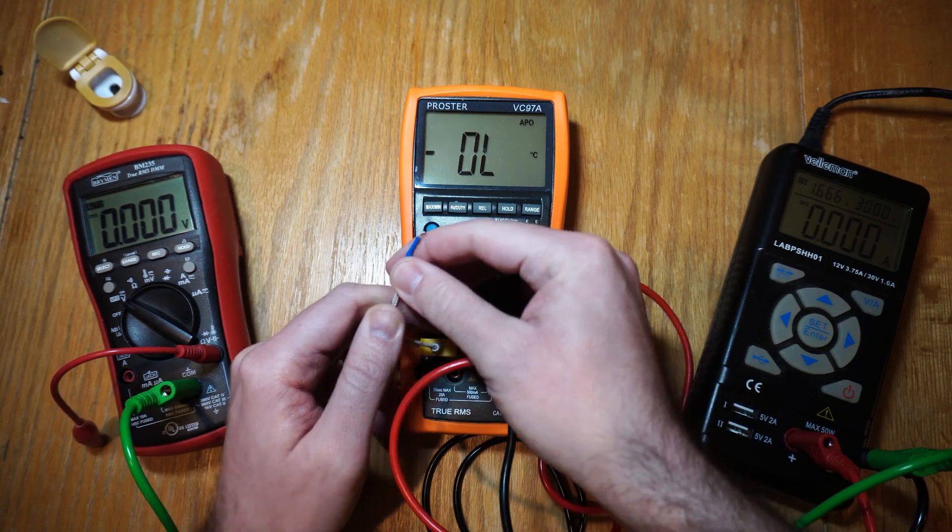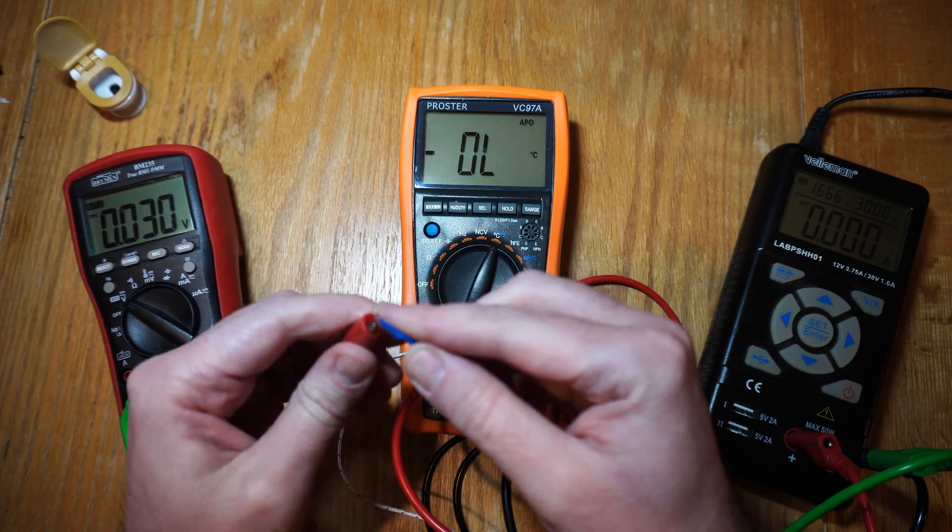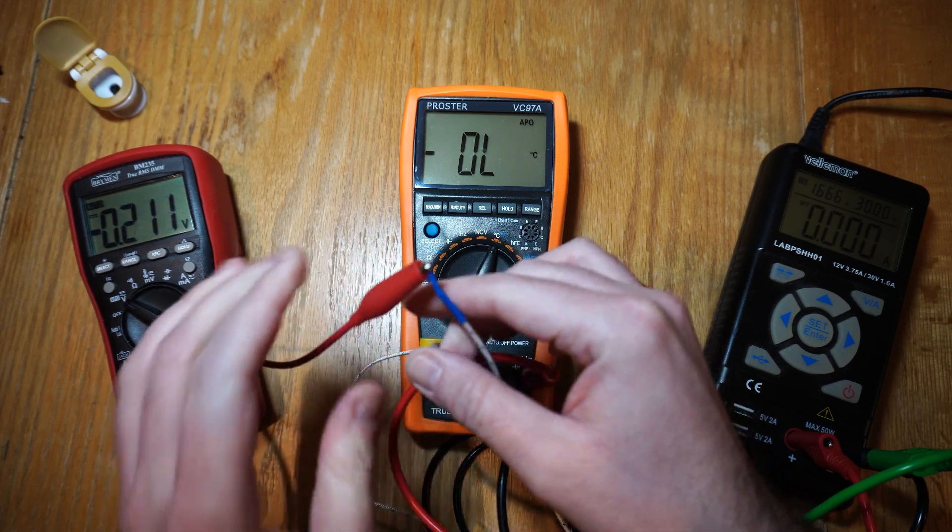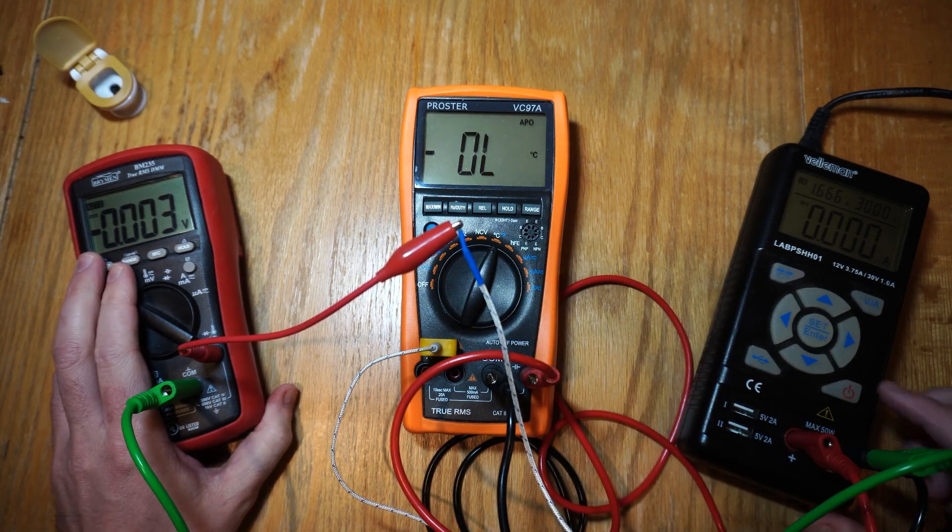Well, let's take this other multimeter that we've got on the side here. And what I'm going to do is I'm just going to connect it up through to the end of the thermocouple there. And you can see the voltage that's being exposed on that thermocouple on this multimeter on the left hand side.